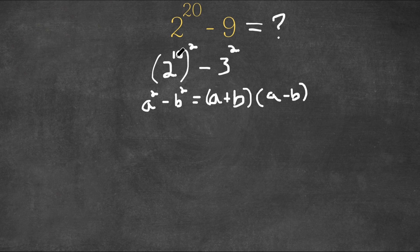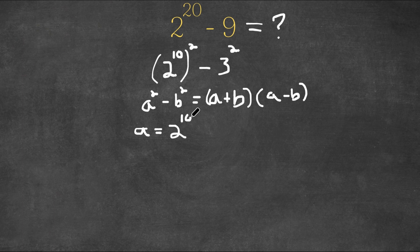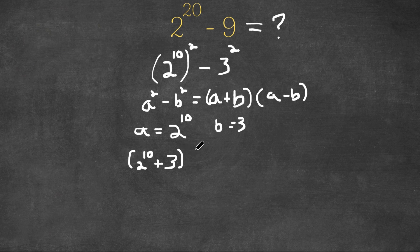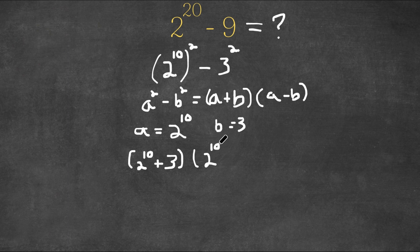So a in this case would be 2 to the power of 10 and b would be 3. So now if we plug in a and b in this expression, we would get 2 to the power of 10 plus 3 in parentheses times 2 to the power of 10 minus 3.